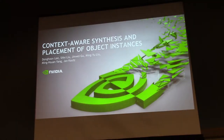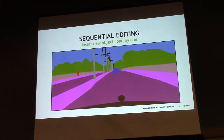Thank you, Sipha. I'm Dong Lee. This is a work about inserting objects into images, done together with several collaborators. Here are some practical results of our proposed algorithm. Given a semantic map, a user wants to insert more objects — say, more persons. We can insert a new person one by one until you are satisfied. And then you can also insert more cars.